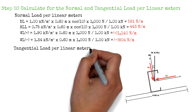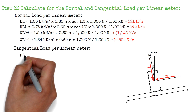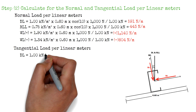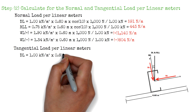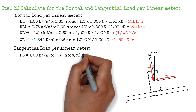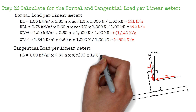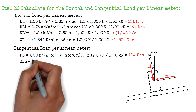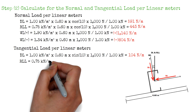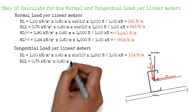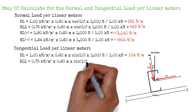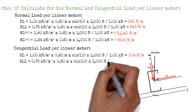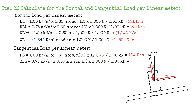Moving on to the tangential load per linear meter. For the dead load: 1.0 kN/m² times the purlin spacing of 0.6 m, times sine of 10 degrees, times 1000, gives a value of 104 N/m. The tangential load per linear meter due to roof live load equals 0.75 kN/m² times 0.6 m, times sine of 10 degrees, times 1000, giving a value of 78 N/m.